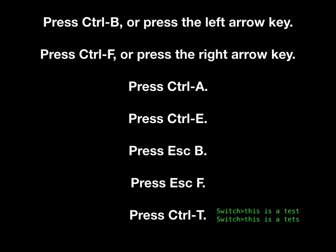Move around the command line to make changes or corrections. Press Ctrl B, or press the left arrow key, to move the cursor back one character. Press Ctrl F, or press the right arrow key, to move the cursor forward one character.